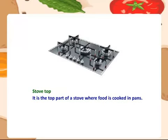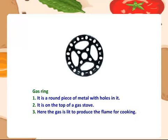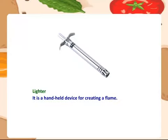Stove top — it is the top part of a stove where food is cooked in pans. Gas ring — it is a round piece of metal with holes in it. It is on the top of a gas stove. Here the gas is lit to produce the flame for cooking.